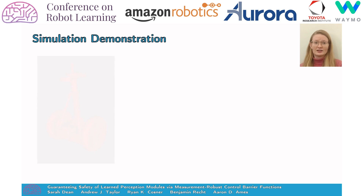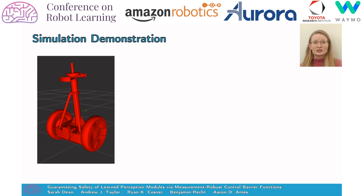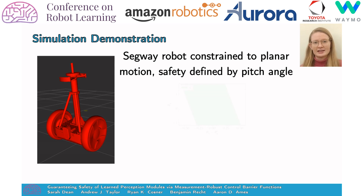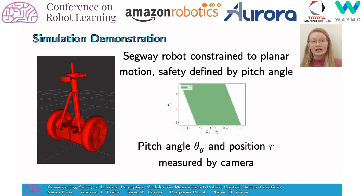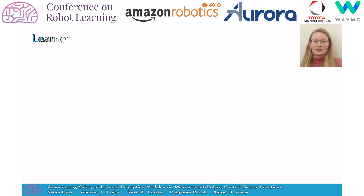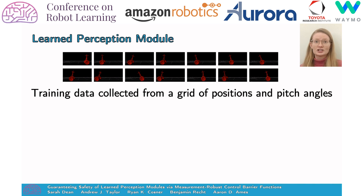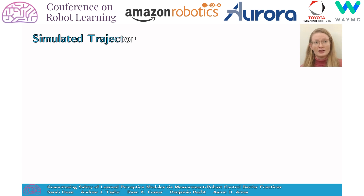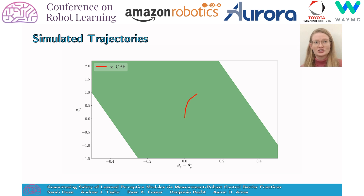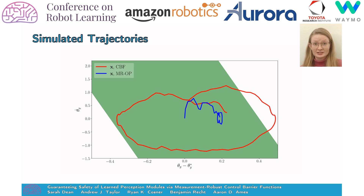To illustrate the effectiveness of measurement-robust control barrier functions, we demonstrate their use on a realistic simulation of a Segway model. Safety is defined as a set dependent on the pitch angle and angular velocity. We suppose that measurements of the pitch angle and the horizontal position are available only through the camera. To train a learned perception module, we use a grid of training data ranging over positions and pitch angles. We learn a non-parametric map from image to position and pitch angle using kernel ridge regression with radial basis functions. We use the predicted pitch angle and position values from this map in closed loop by wrapping the control barrier condition around a PD controller. Due to the measurement errors, the nominal control barrier function condition fails to keep the system safe. However, the robust control barrier function condition is successful.